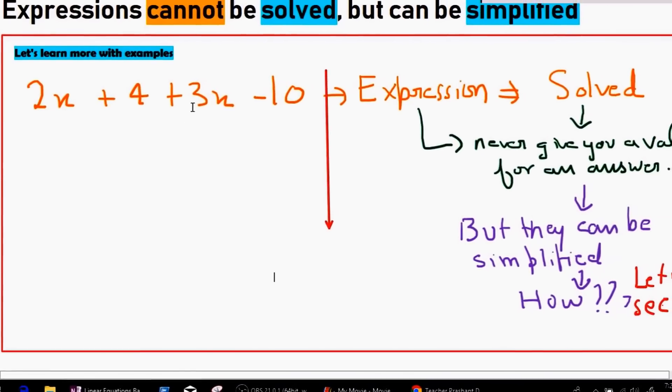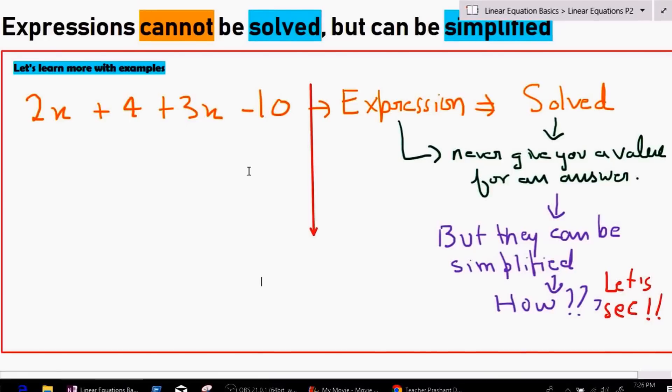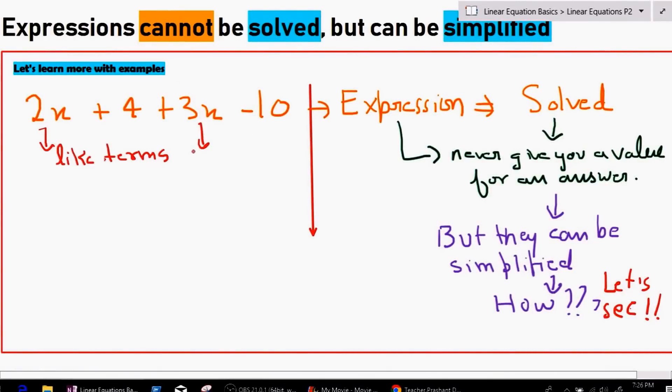So we see 2x and 3x. So 2x and 3x are basically like terms. Now if you guys don't know what is a like term, like term is a term which has the same variable. So let me write a few more examples so that it is clear for you. Like 3y, 4y, 7y, or 2z, 5z, or 10z, or 4x, 2x, or 6x. As we can see, the first set is like terms.